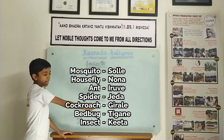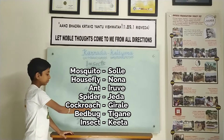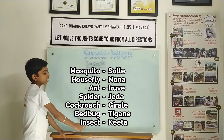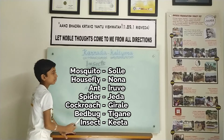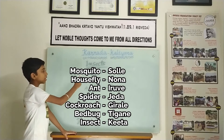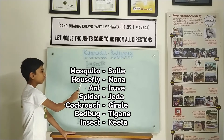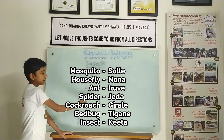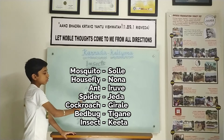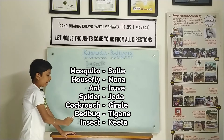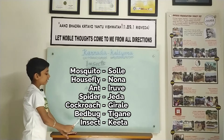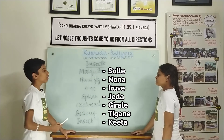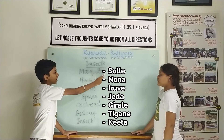Cockroach: jirale. Bed bug: tigani. Insect: keeta. Let's repeat it again — mosquito: solleh, housefly: nona, ant: iruve, spider: jada, cockroach: jirale, bed bug: tigani, insect: keeta.